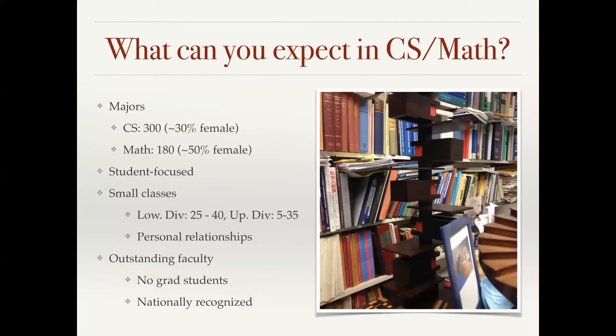So what can you expect in the computer science and mathematics department? We have about 300 computer science majors, 30% of which are female, and about 180 mathematics majors, about half of whom are female. Our department is very student-focused. We have small classes, with lower division sizes of about 25 to 40 and upper division classes around 5 to 35 students. This gives us plenty of opportunities to form personal relationships with our students. We work in office hours with them daily, and our attention is entirely on our undergraduates. We have no graduate students, so we do research with our undergraduates.